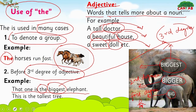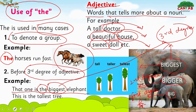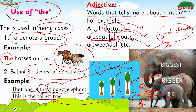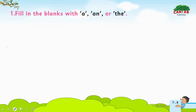The second example is: 'This is the tallest tree.' You can see that this tree is the tallest. 'Tall' is the first degree of adjective, 'taller' is the second, and 'tallest' is the third degree. Since 'tallest' is a third degree adjective, 'the' is used before it.